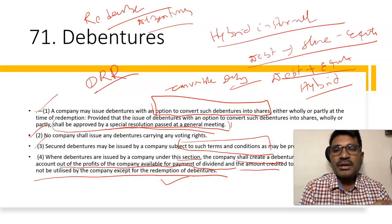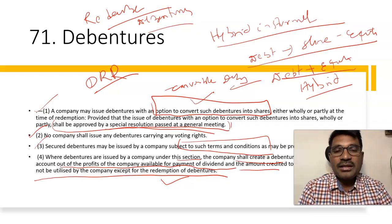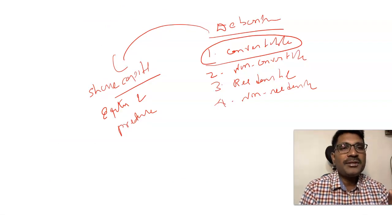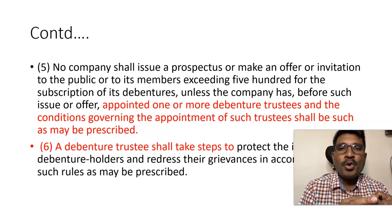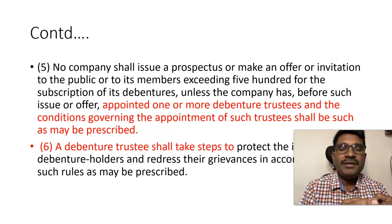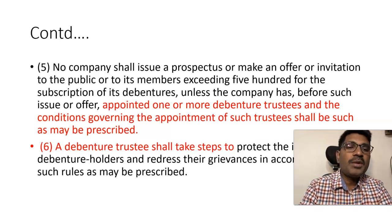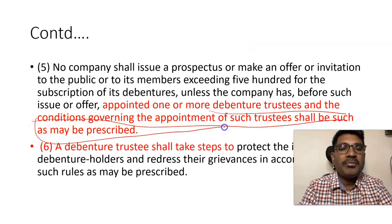When you see Section 71 sub-clause 1, you find the option of convertible debentures, and sub-clause 4 uses the language of redeemable debentures — these are the types: convertible, non-convertible, redeemable, and non-redeemable debentures. Sub-clause 5: No company shall issue a prospectus or make an offer or invitation to the public or to its members exceeding 500 for the subscription of debentures unless the company has, before such issue or offer, appointed one or more debenture trustees to govern the fund raised by the debentures.